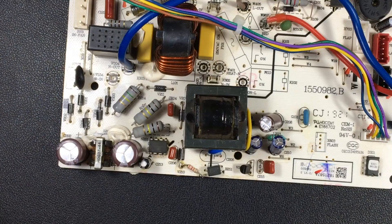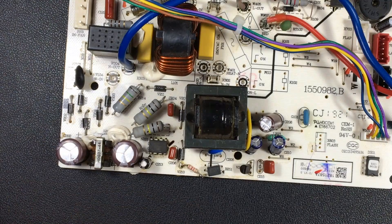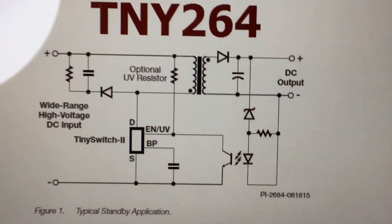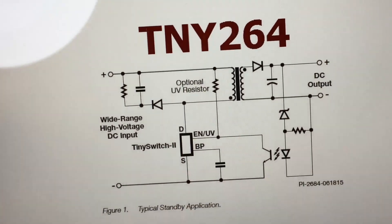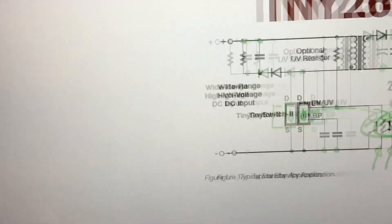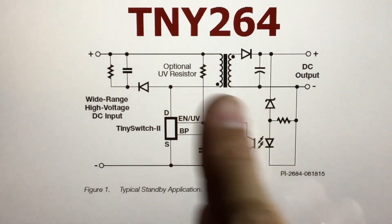Next we will see a brief circuit so that you can see it in terms of electronic circuits and know how one of these switching power supplies is formed. I will show you as an example a TNY-264. Here we have a TNY-264, and as you can see, we have several components that form this area of the power supply.